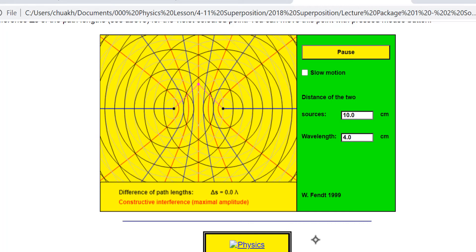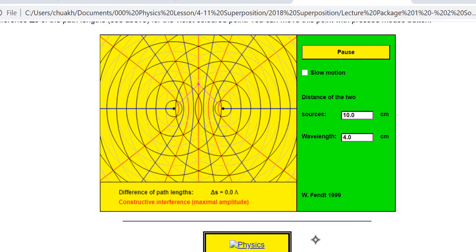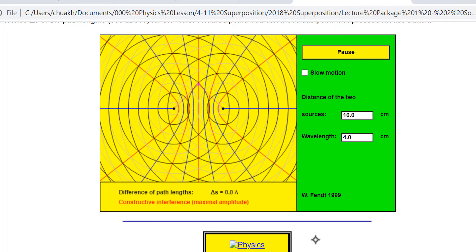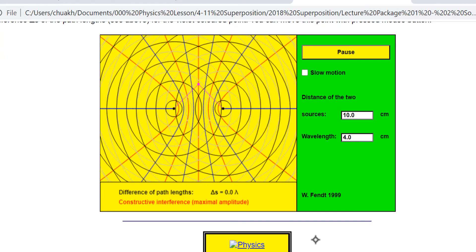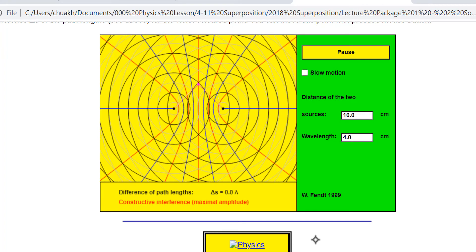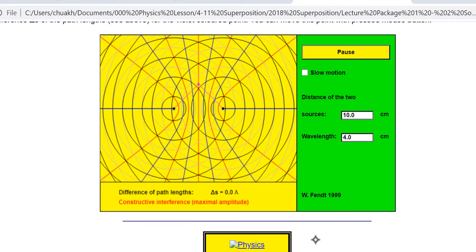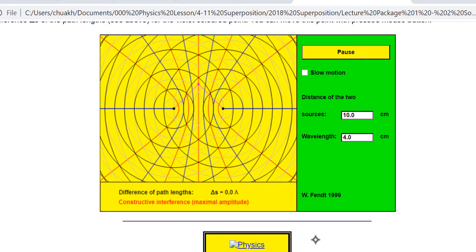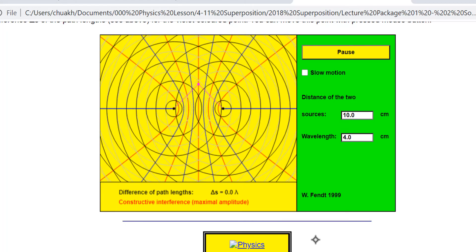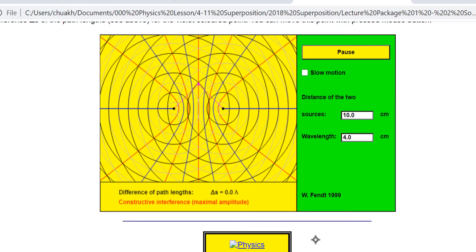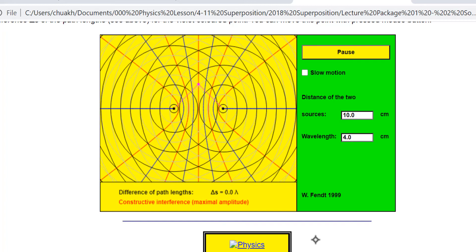So this is a zeroth order antinodal line, and this is the nodal line where the path difference is zero. So you can see, right? Crest meets trough. And the intersecting point will travel along this nodal line. And the amplitude of oscillation along this line is zero.